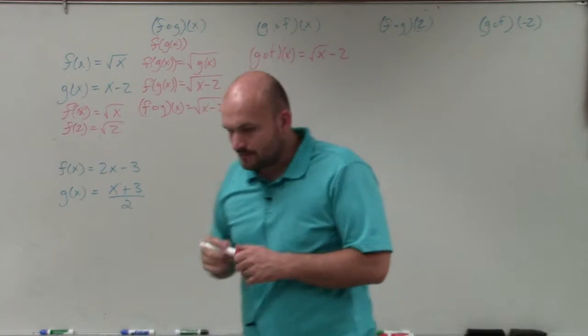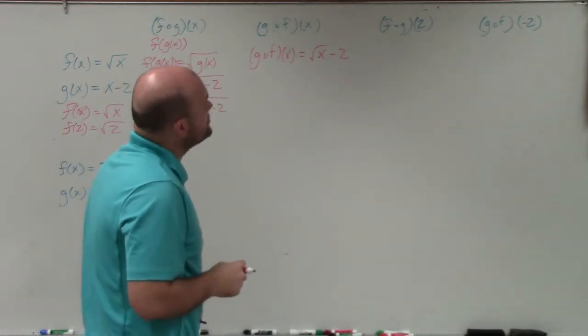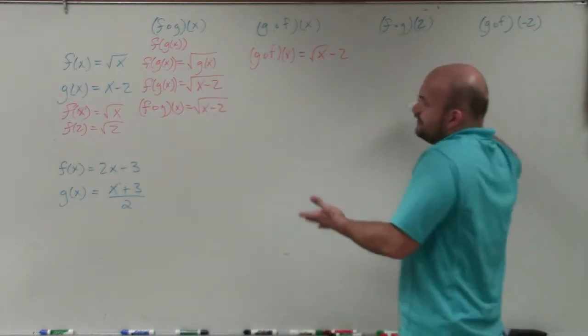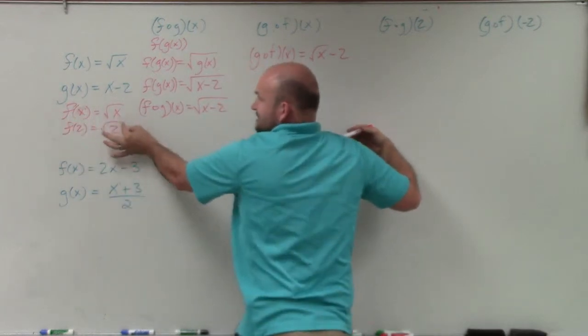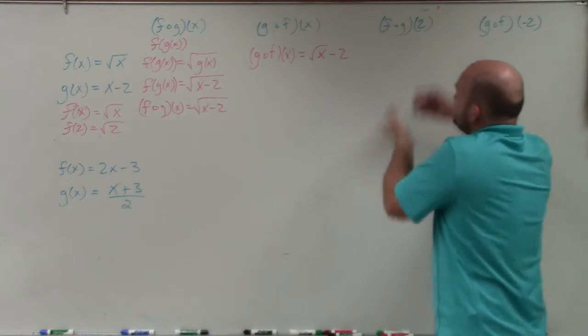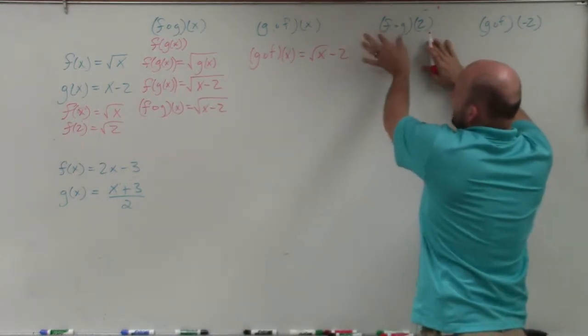Okay. So now what we're going to do is now we are going to evaluate them. So basically, what you can do is, just like we did before, if I have a value in for x, if I give you f of x equals the square root of x, then I say what is f of 2, then you plug 2 in for that function, right? It's the same thing over here. Now, what is f of g of x? Well, what's f of g of 2?